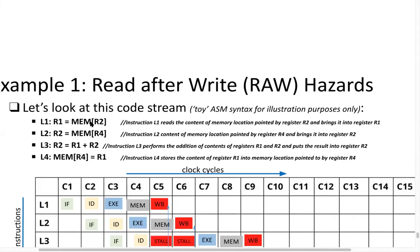L3 tries to reuse the updated R2 and overwrite it again — so L3 must wait until L2 has gone through the write-back phase. Only when L2 has written to R2 can L3 read it and then update R2. L3 exhibits Read After Write because it reads R2 after L2 has written it. Within itself, L3 also waits for that new R2, which depends on L2.